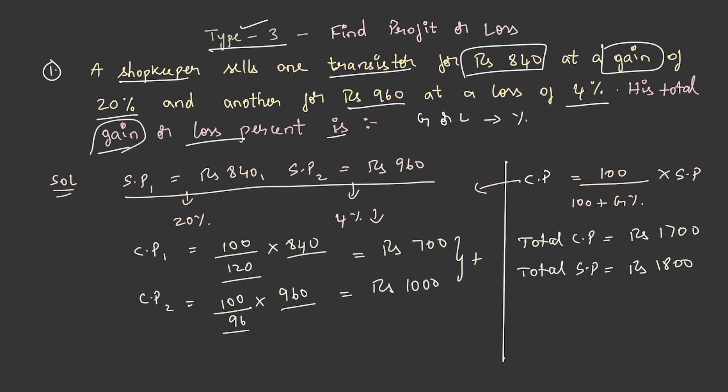Now we have to find whether it is a gain or loss. How do we do that? If the selling price is greater than the cost price, then it is gain. Then how to find out gain? Selling price minus cost price which is equal to rupees 100.